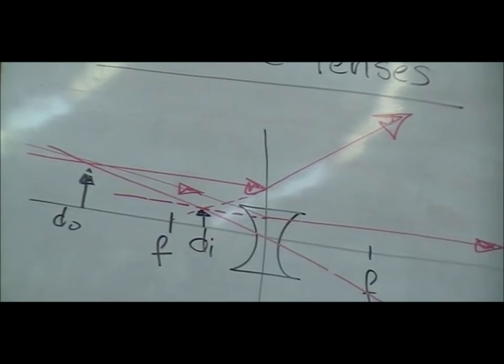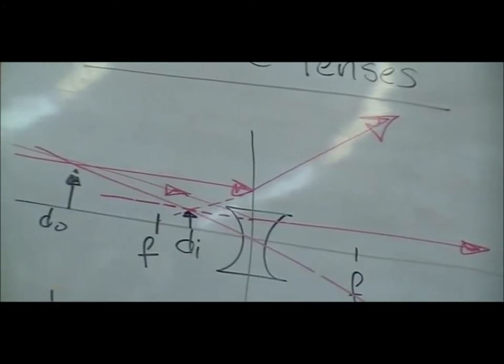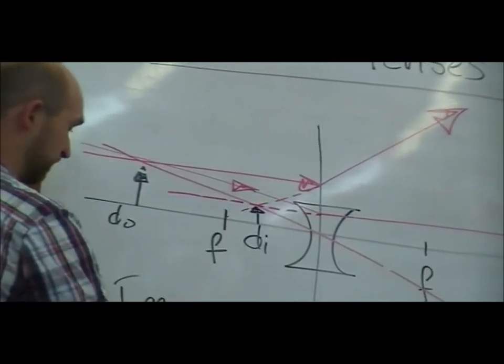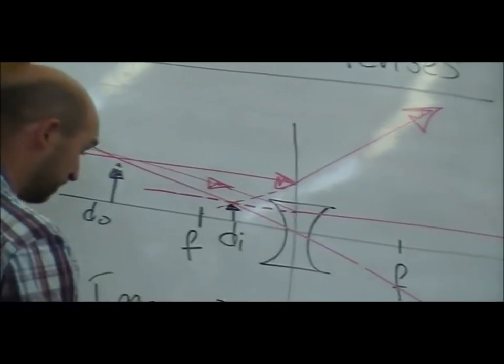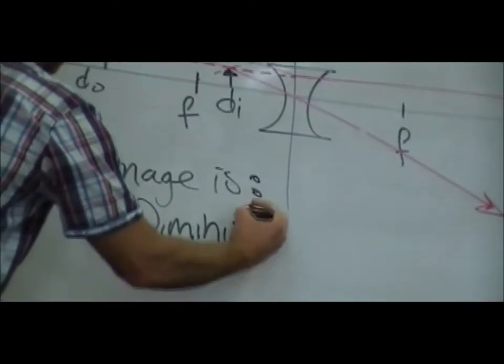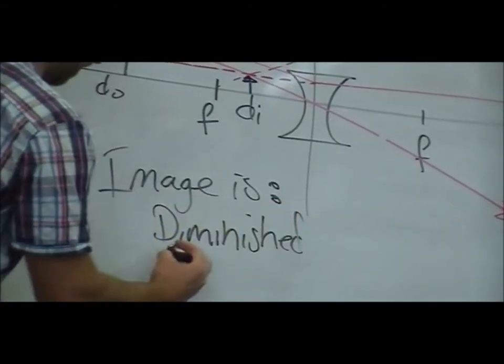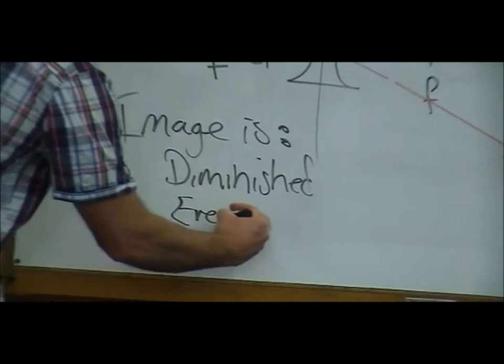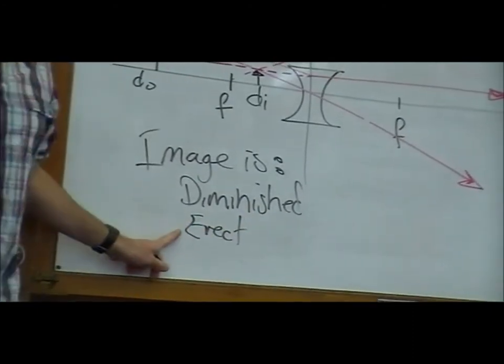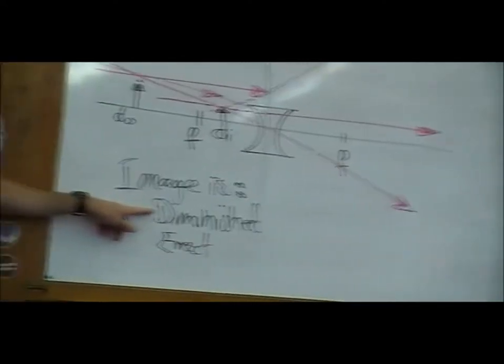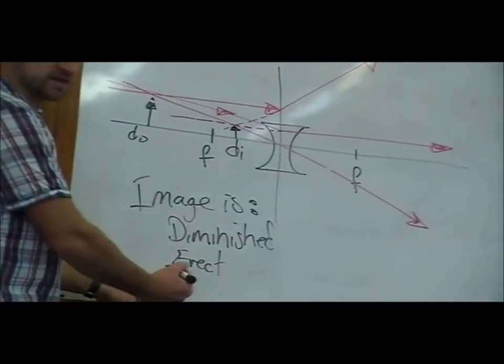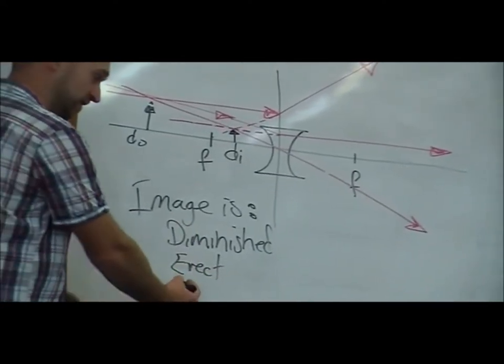What can we see about that image? We can give three describing words for that. So, the size is diminished because it's smaller. It's erect. It's erect. It's the right way up. So, the orientation is erect. The magnification is diminished. And the nature is virtual. Virtual.